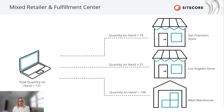Your fulfillment locations can be a mix and match with multiple types of locations. In OrderCloud, they are simply represented by an address. You've probably noticed by now that there is also an aggregate quantity on hand that rolls up to the product level. This allows you to see how many units are available across all locations. Here we have 131, which is a total of 10 from the San Francisco store, 21 from LA, and 100 from the West warehouse.